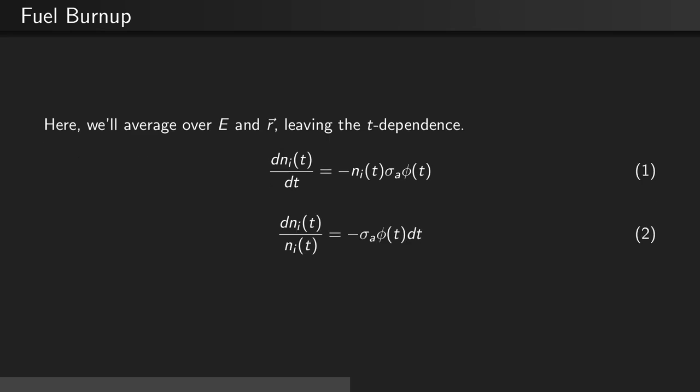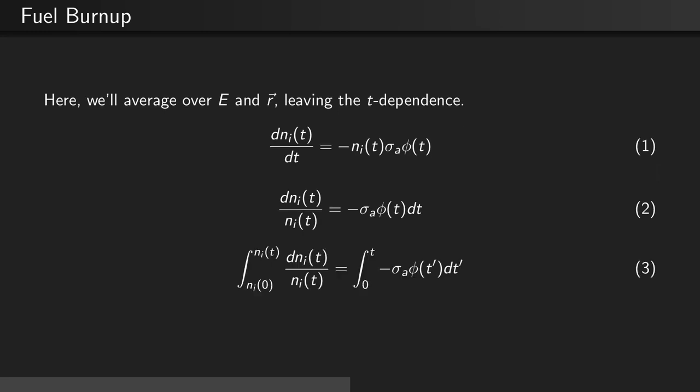We can rearrange this to be dNi divided by Ni equal to minus sigma A phi times dt. Now, let's integrate both sides from time t equals zero to some time t in the future.